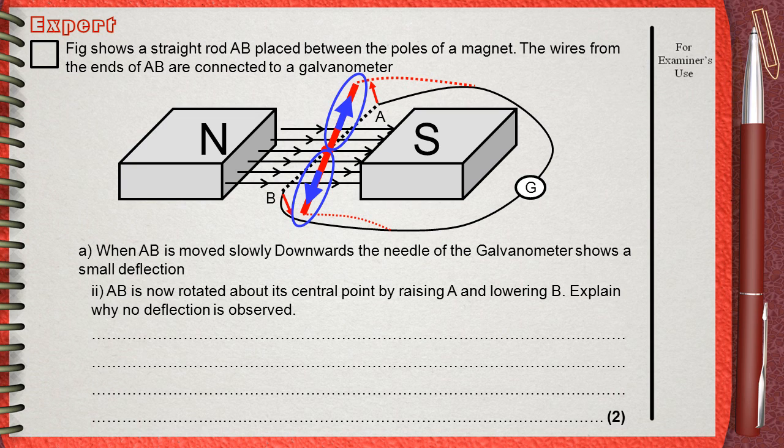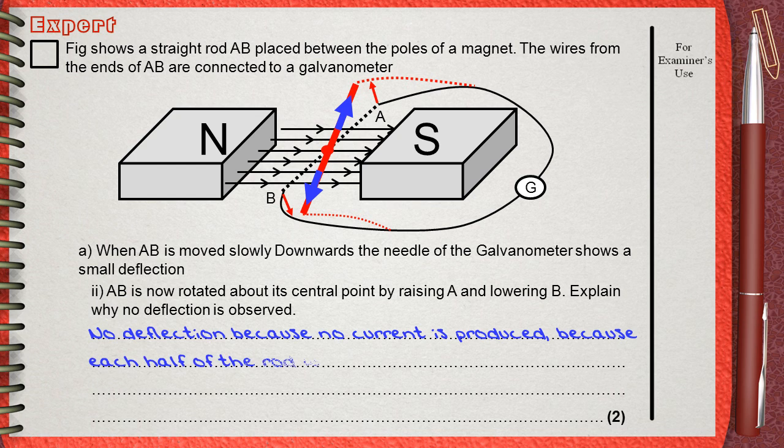These two currents are produced together at the same time. They have the same strength and they are in the opposite direction. That's why they will cancel each other. So simply, if you move A up and B down, no current will be detected. We can say that no deflection because no current is produced,